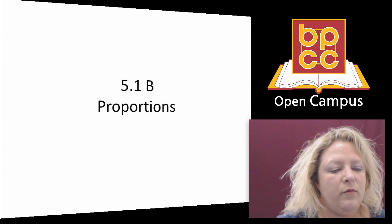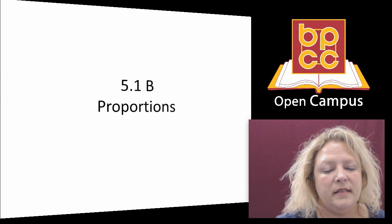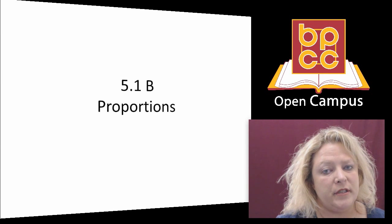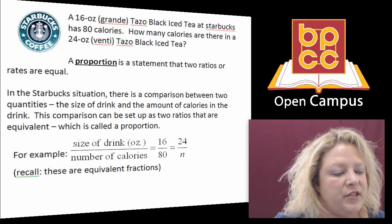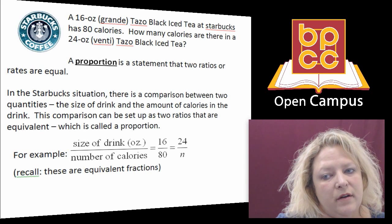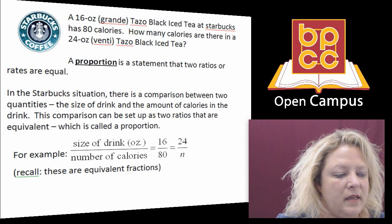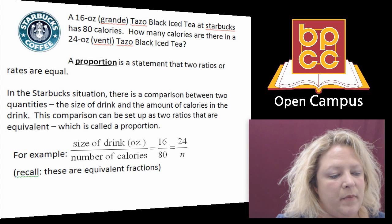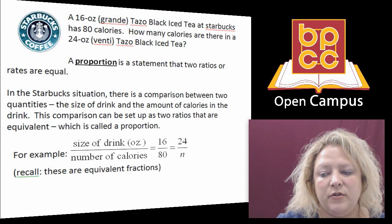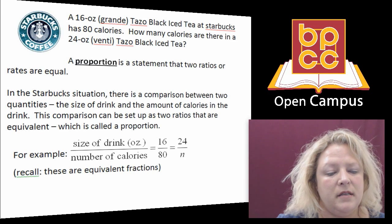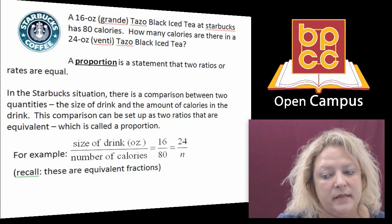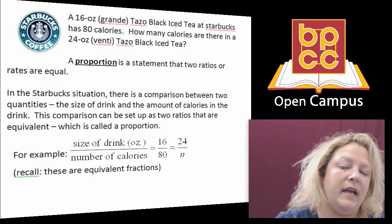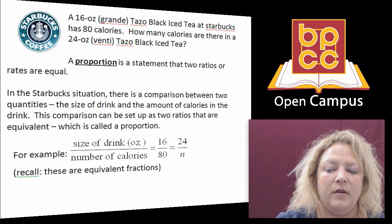Hey everybody, it's Ms. Barnacle again with another module, and today we're going to talk about proportions. Proportions, if you look at the screen, are two ratios that are set equal to each other. This example uses Starbucks: a 16-ounce drink equals 80 calories, so if you change to 24 ounces, it wants to know how many calories that would be. Those are called proportions, and that's what we're fixing to work on on the board.